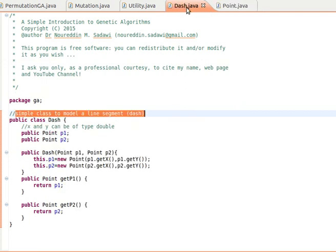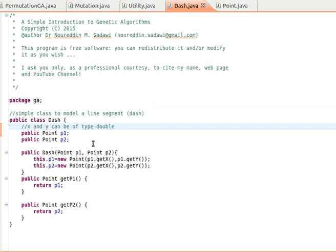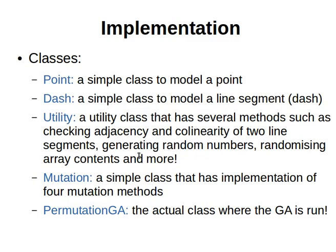This class called Point will be used in the Dash or Line Segment class. It has two points — these are just to get the values. Another class, and this is actually a big class — I named it Utility. In it, I have put several methods, such as methods for checking the adjacency of two line segments, or checking the collinearity of two line segments, as I explained in previous videos. Also methods for generating random numbers and randomizing array contents, for example when we initialize the population, and many more methods.